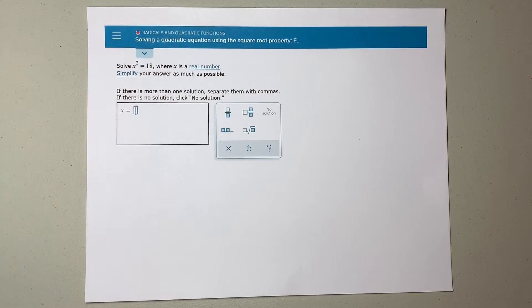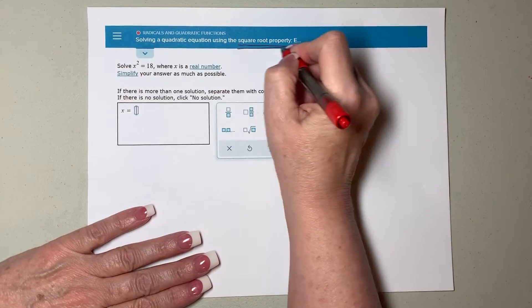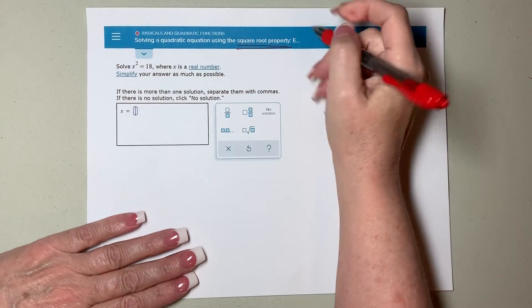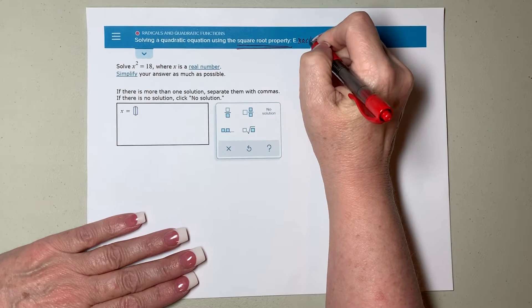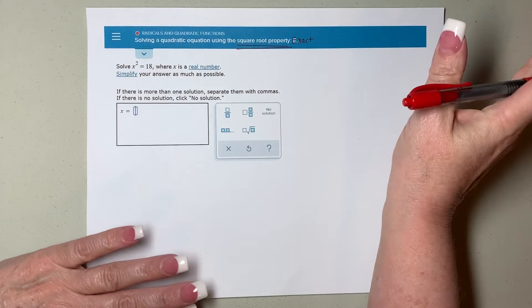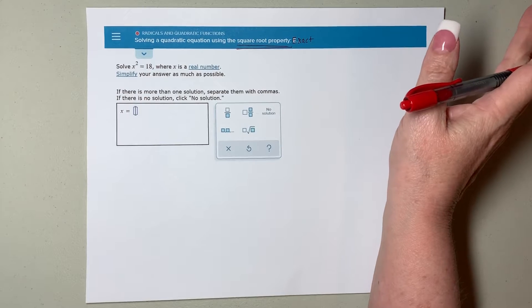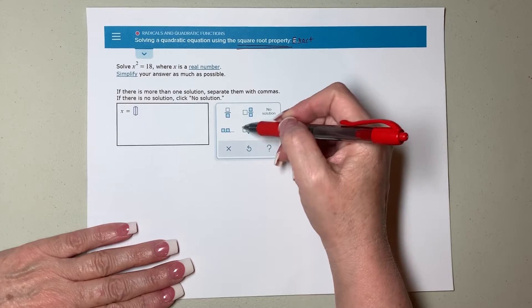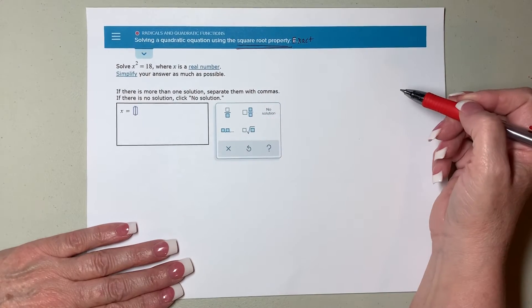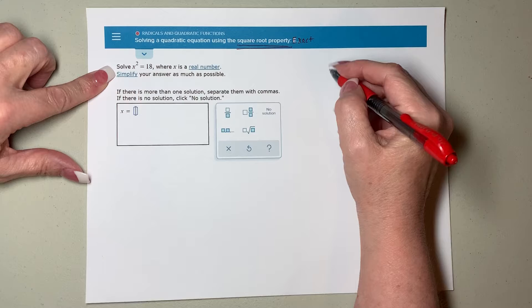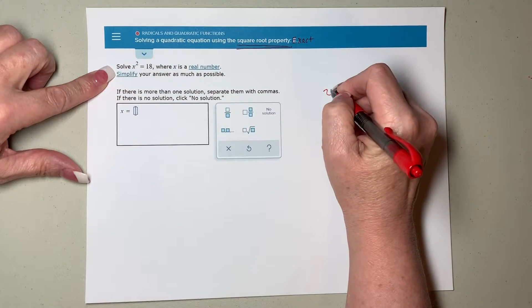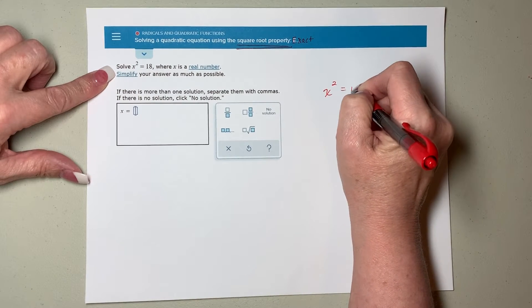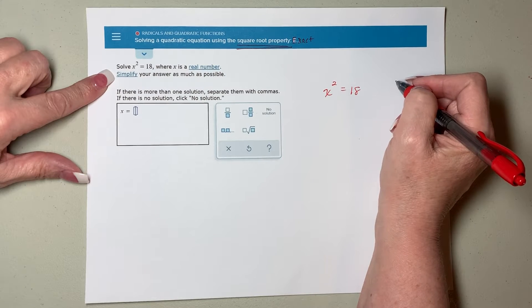This problem wants you to solve a quadratic equation using the square root property and they want exact answers. And when they say exact answers, that means don't pick up your calculator and round it off in a decimal. And I can already tell that because they've got this square root symbol here for you. It says solve x squared equals 18 where x is a real number. Simplify your answer as much as possible.